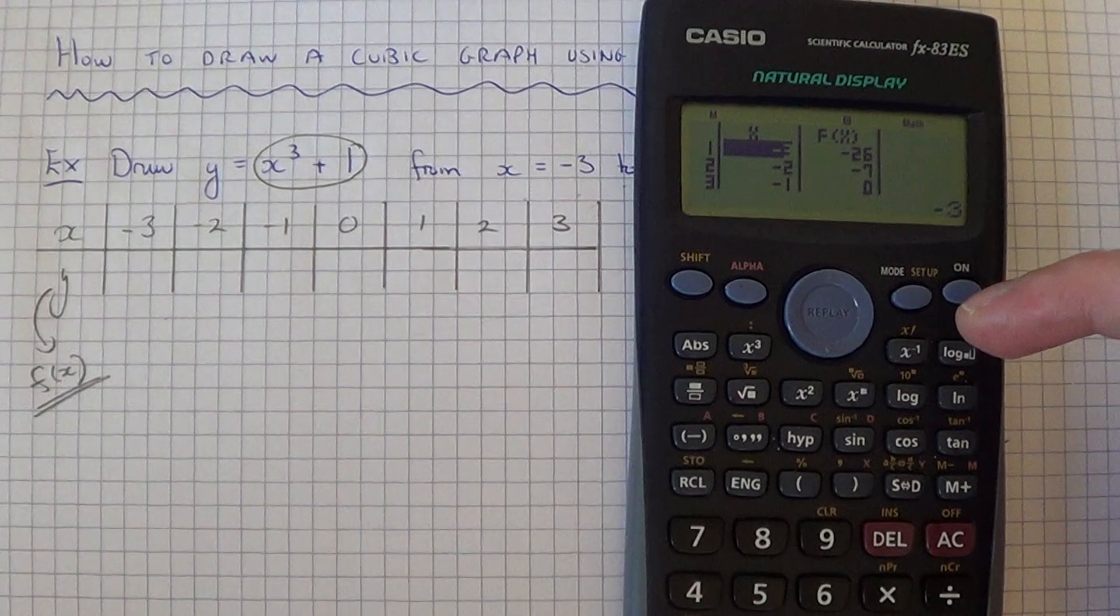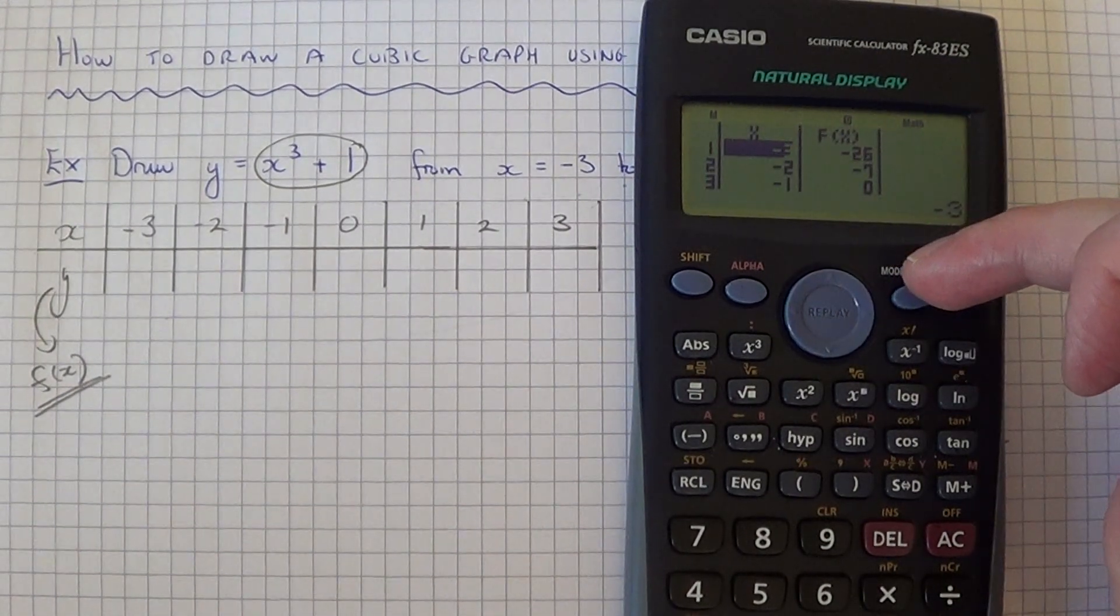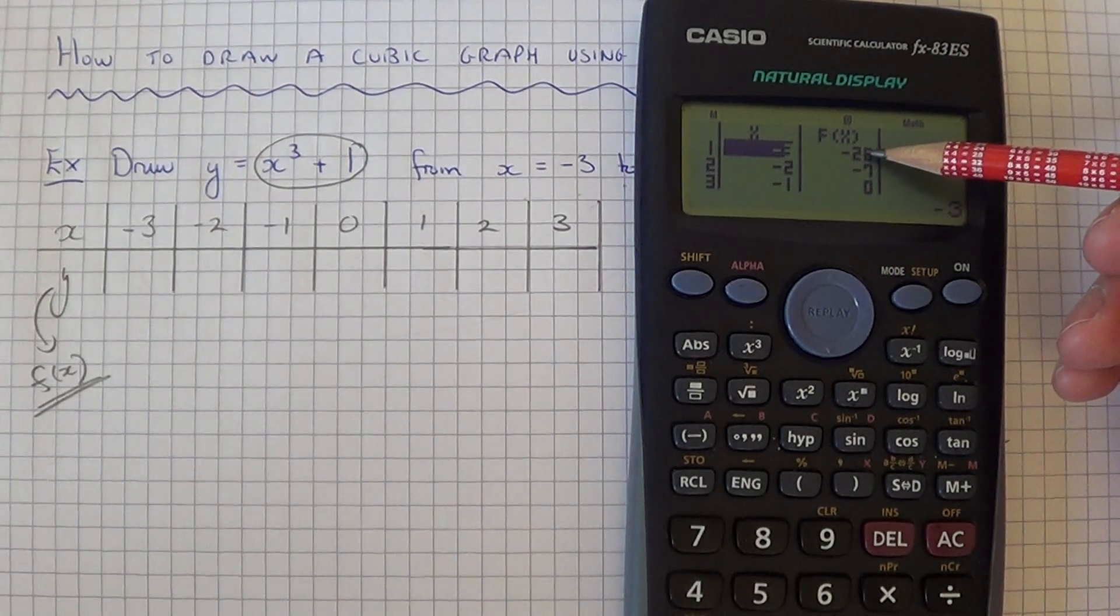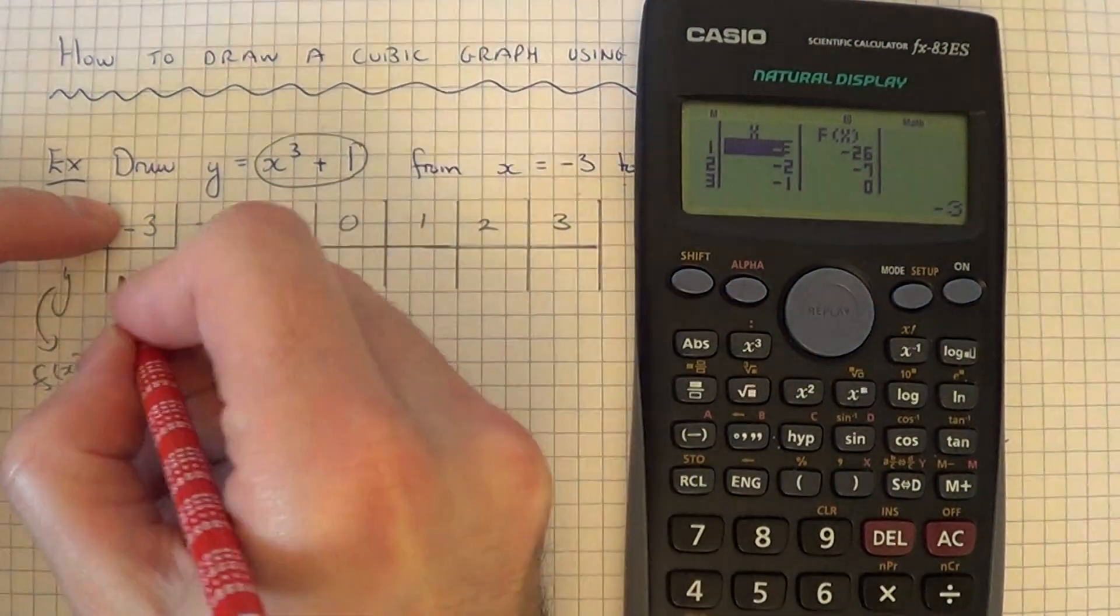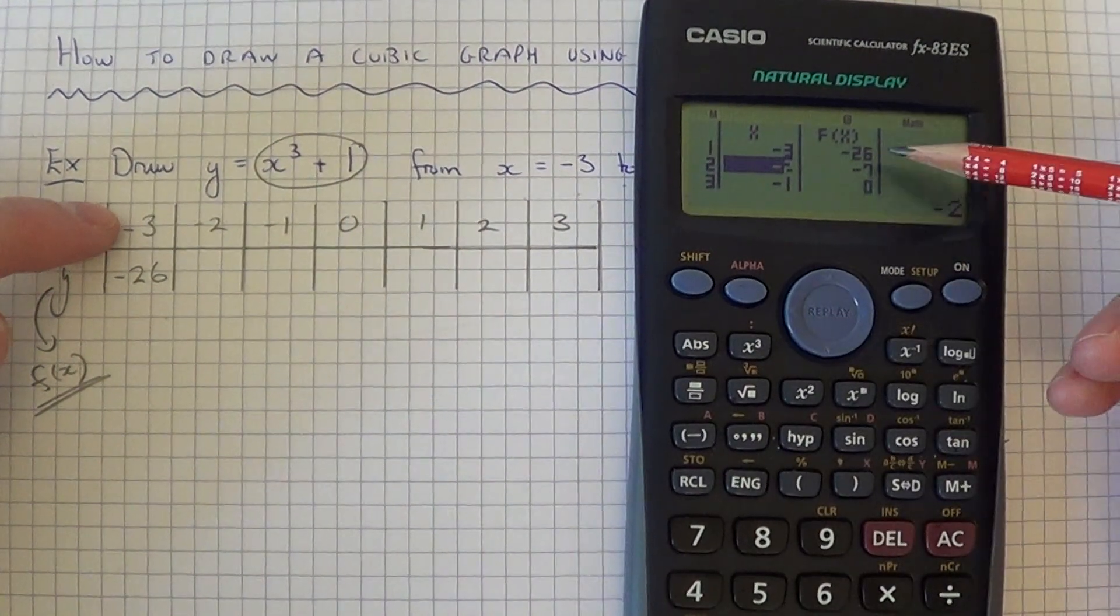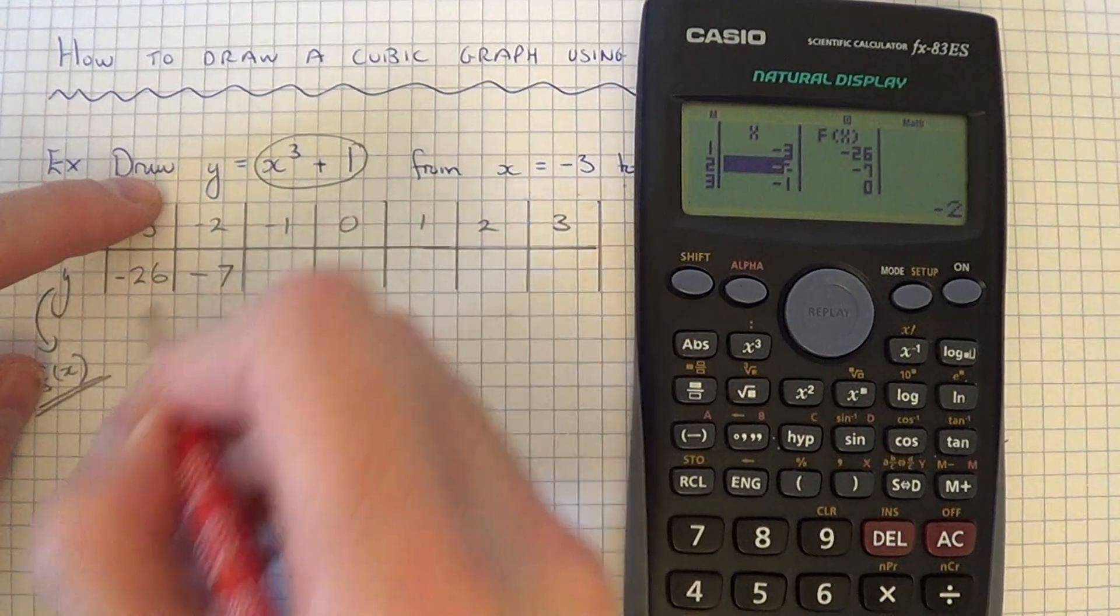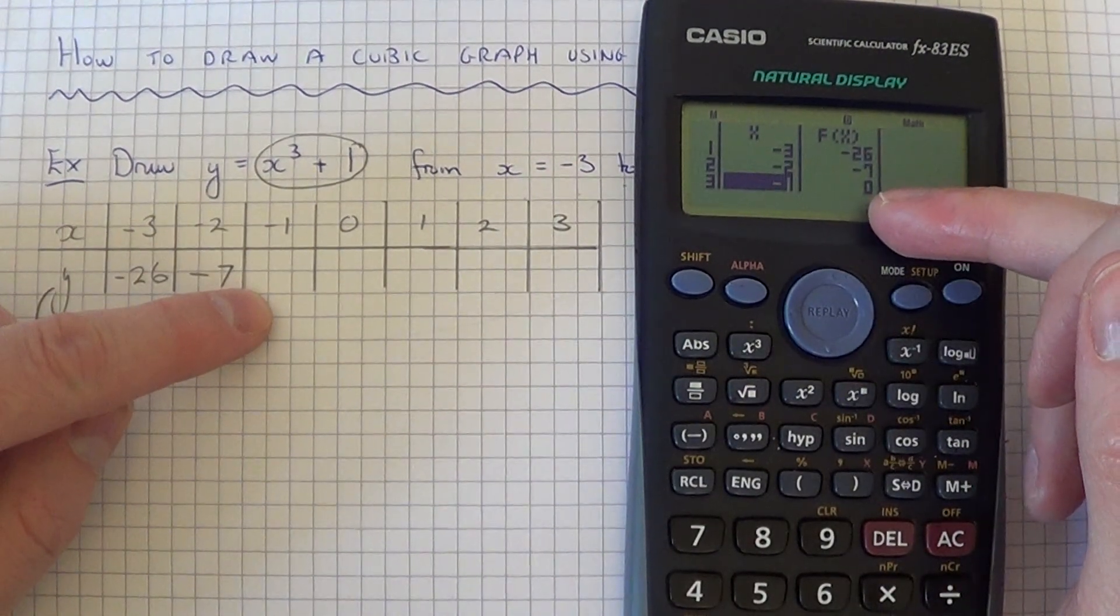Okay, and the calculator's now done the table of values for us. We just need to look in the last column for our y-coordinates. So at minus 3, the y-coordinate is minus 26. At minus 2, the y-coordinate is minus 7. At minus 1, the y-coordinate is 0.